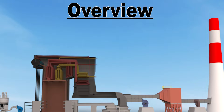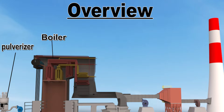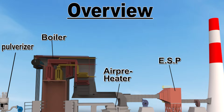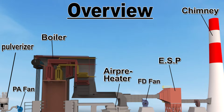This is an overview to understand the location of different fans and other elements of the boiler, including the pulverizer, boiler, air pre-heater, ESP, stack or chimney, PA Fan, FD Fan, and ID Fan.